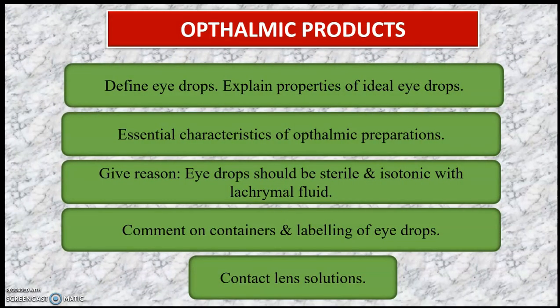The next chapter is ophthalmic products. The important questions in this chapter are: define eye drops; explain the properties of ideal eye drops; essential characteristics of ophthalmic preparations. The next question is give the reason why eye drops should be sterile and isotonic with lacrimal fluid. Then, comment on containers and labeling of eye drops. The next important point is contact lens solutions.